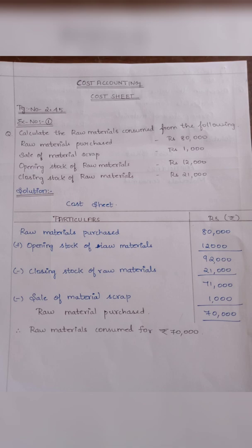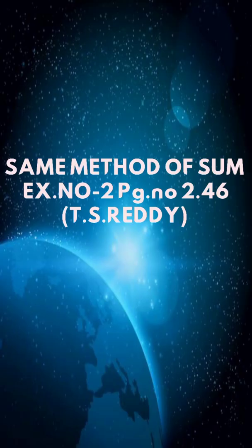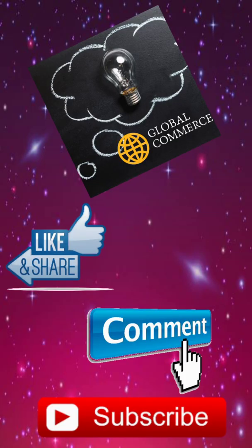Minus the sale of materials scrap: Rs. 1,000. So Rs. 71,000 minus Rs. 1,000 is Rs. 70,000. This is the amount we receive from the raw materials consumed. Therefore, raw materials consumed is Rs. 70,000. In a 5-mark or 10-mark question, the same method applies. Exercise number 2 will be next — if there is any doubt, you can post it in the comment section. Thank you for watching our video. Please share it, like it, comment on it, and subscribe our channel.